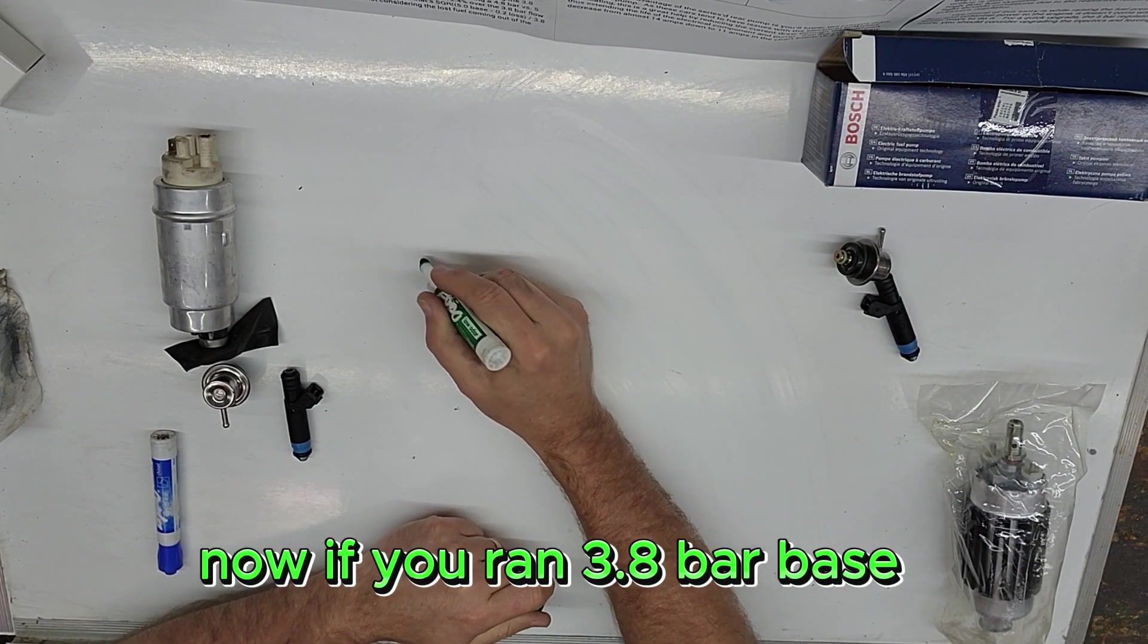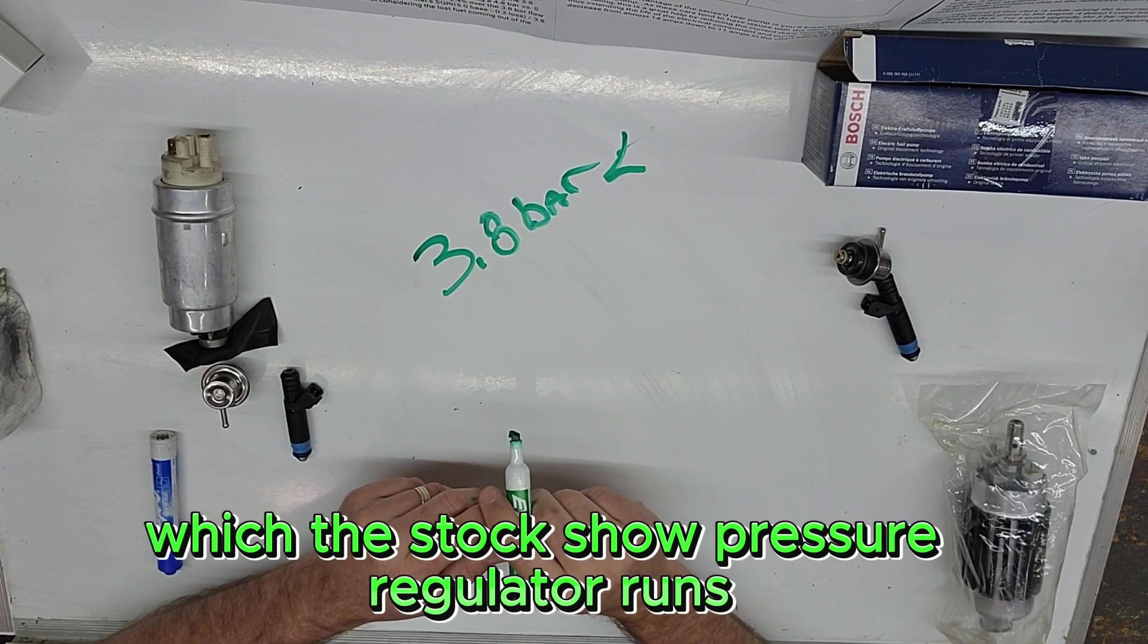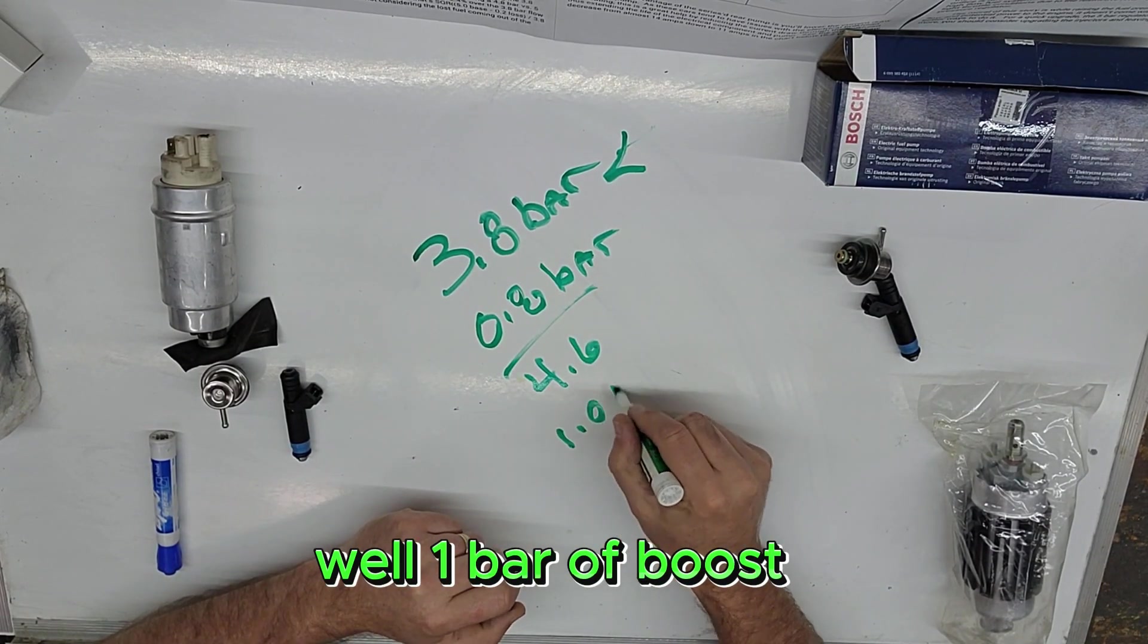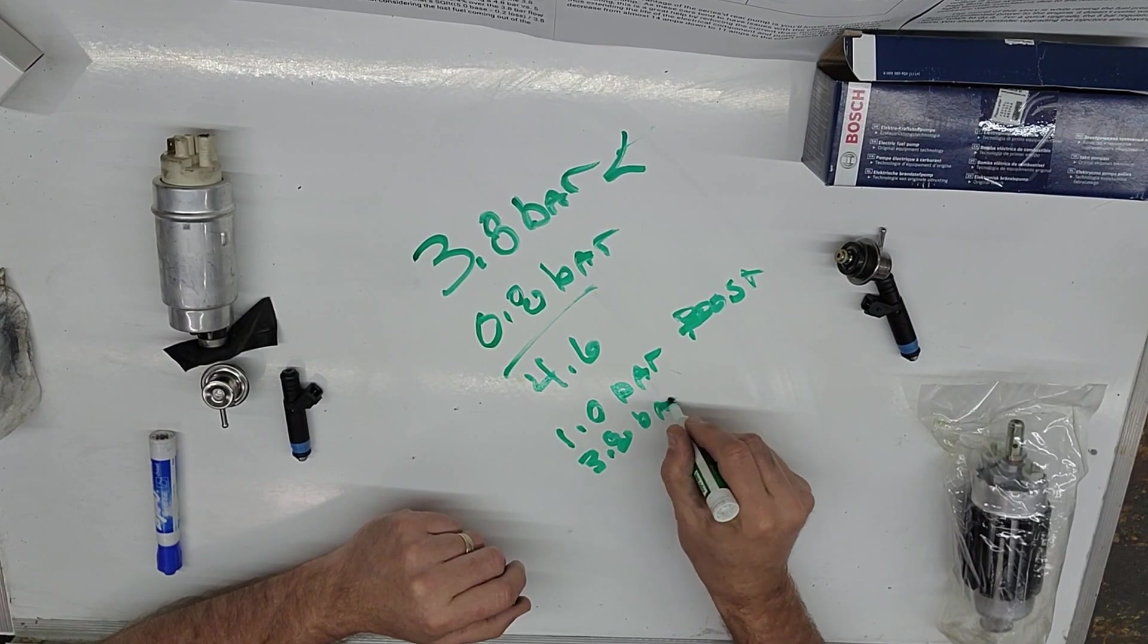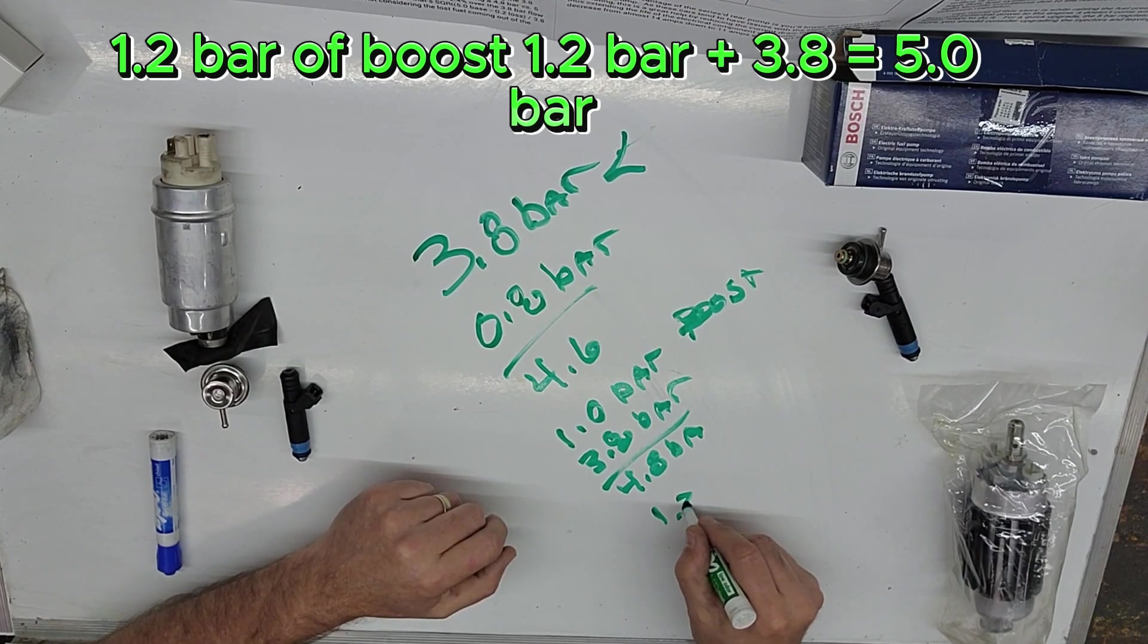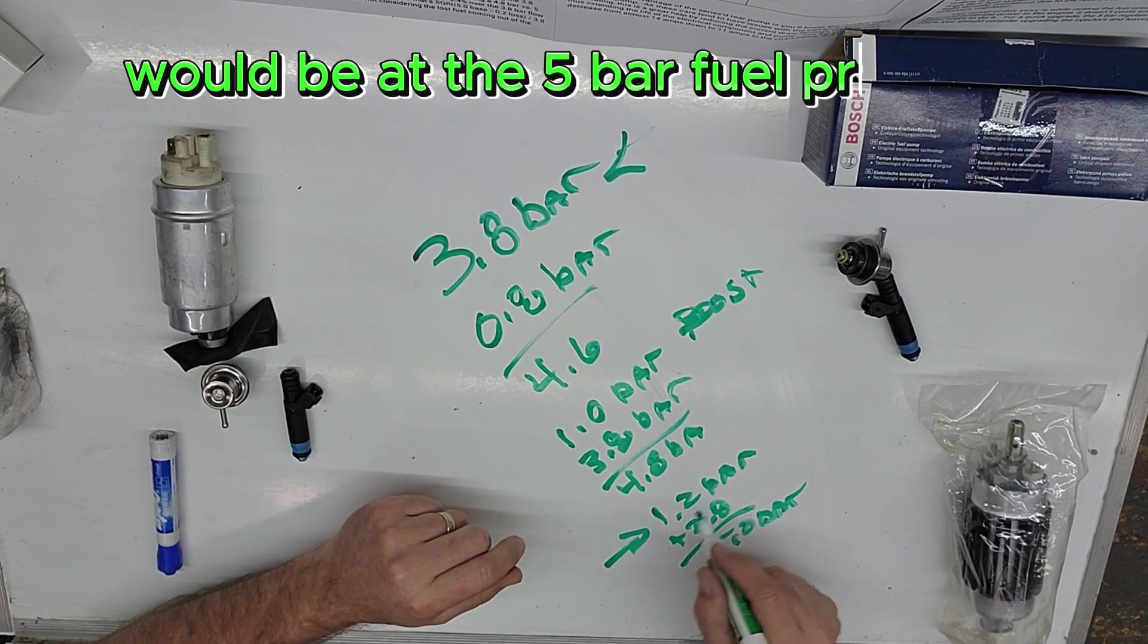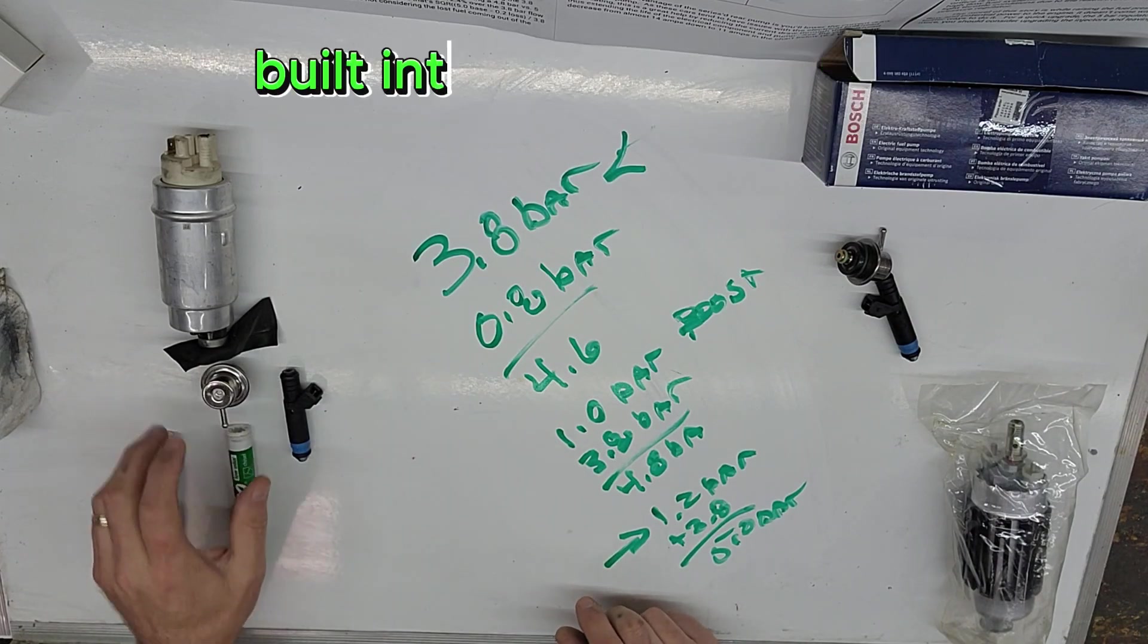Now, if you ran a 3.8 bar base, which the stock fuel pressure regulator runs, at 0.8 bar boost, you'd be at 4.6 bar. Well, 1 bar of boost would produce 4.8 bar. 1.2 bar of boost, 1.2 bar plus 3.8 equals 5.0 bar. And 1.2 bar of boost would be at the 5 bar fuel pressure, which is well under the 6 bar pressure protection limit built into the stock pump.